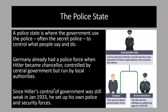The German state that Hitler created after 1933 was a police state. This was a state in which the Nazi government used the police, usually the secret police, to control what people did and what they said. People who did or said anything to harm the state or the Nazi party were punished.